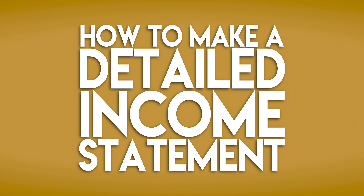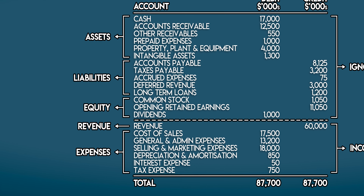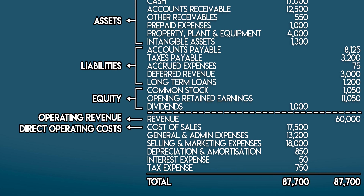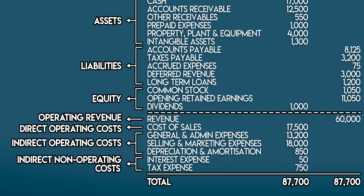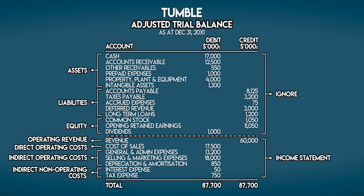But how do we make a detailed income statement? The method is pretty much the same. If we go back to Tumble's adjusted trial balance, all we need to do is categorize their expenses. Cost of sales is a direct operating cost. General, administrative, selling, marketing, depreciation, and amortization are all indirect operating costs. And finally, interest and tax expenses are indirect non-operating costs. But please be careful with depreciation and amortization — if the long-term assets that they relate to aren't used in operations, then these would also be indirect non-operating costs. In this video, I'm assuming that they are used in operations.